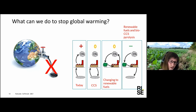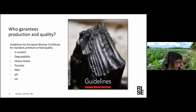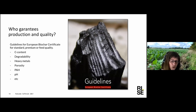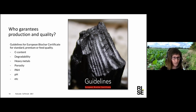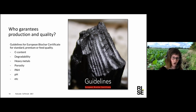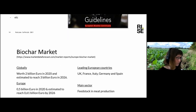There is a European Biochar Certificate guideline, and also national guidelines in different countries. These guidelines examine how biochar is made, the raw material, carbon content, degradability, heavy metals, porosity, and accumulation of PAH — polyaromatic hydrocarbons — and more. These certificates need to follow the products so we can be sure we have a good product with the required qualities.